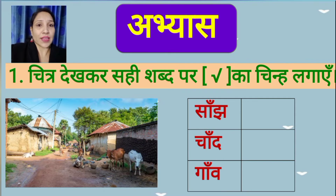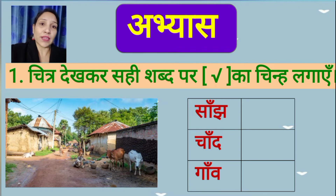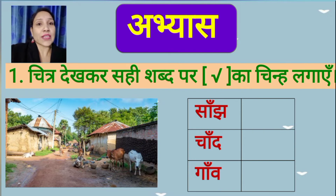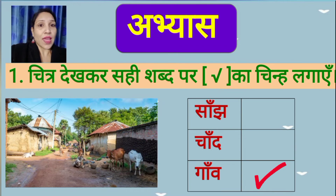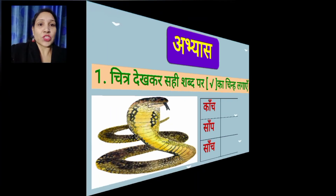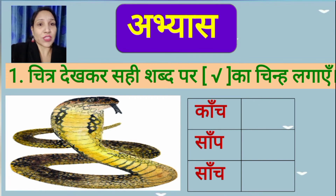In this question, you have to look at the picture and tick the correct word. You can see here the picture of 'gaun', so we will tick in front of 'gaun'. Now see the next picture.